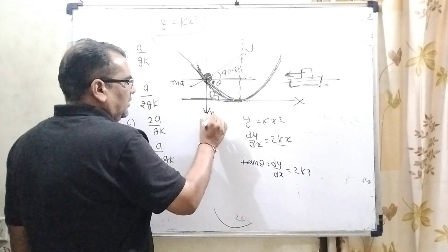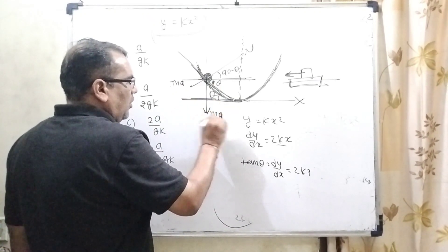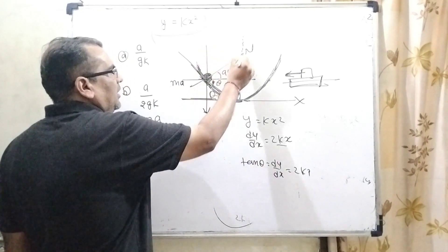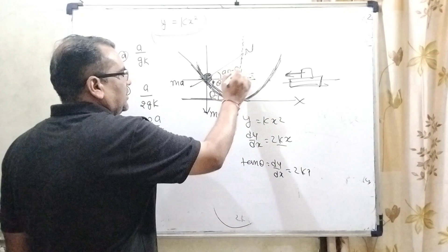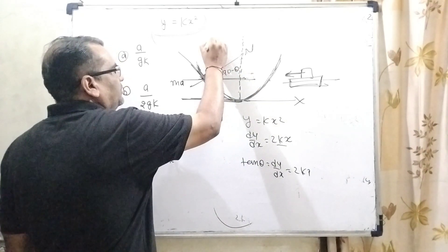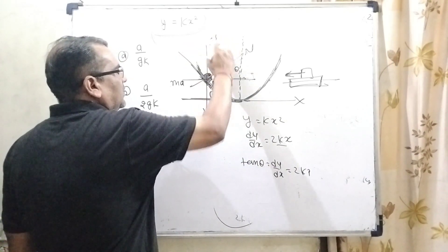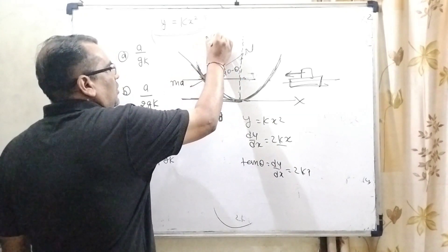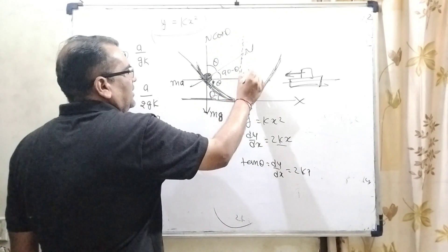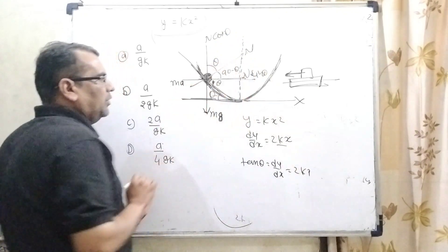mg, the weight of the bead, is taking downward direction. Here n is divided into components 90 minus theta. So here it can be written as 90 minus theta, then it becomes theta. So here n cos theta and it is n sin theta. Is it okay?